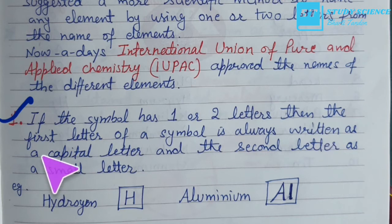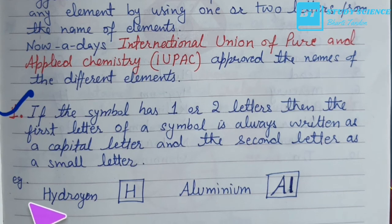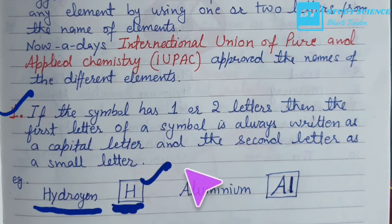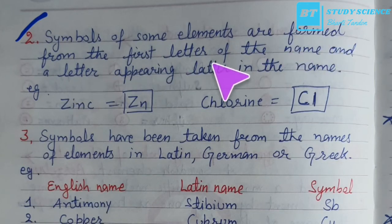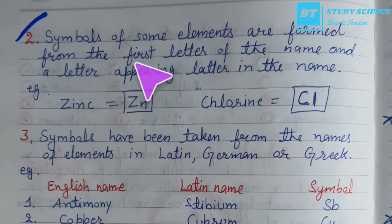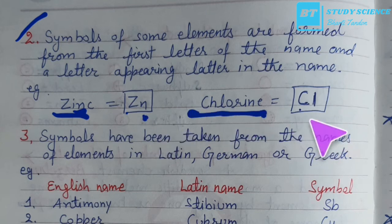First rule: if the symbol has one or two letters, the first letter is always written as a capital letter and the second as a small letter. For example, hydrogen uses capital H; aluminium uses capital A and small l (Al). Some elements use the first letter and a letter appearing later in the name — for example, zinc uses Z and n (Zn), and chlorine uses C and l (Cl).